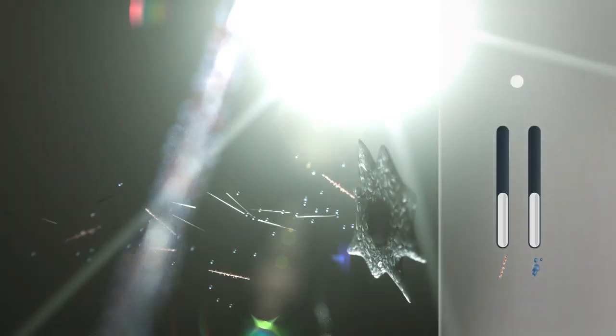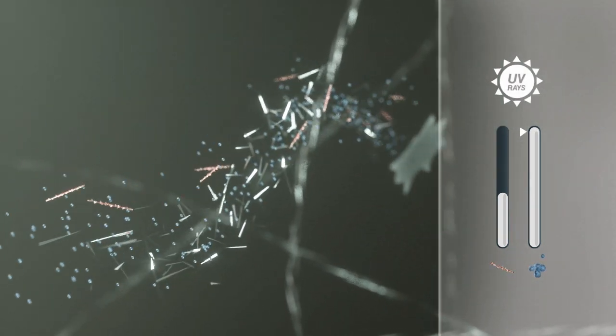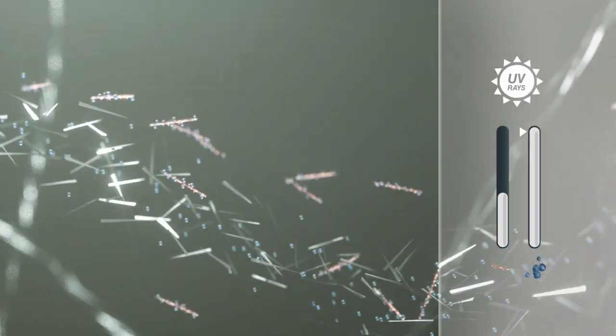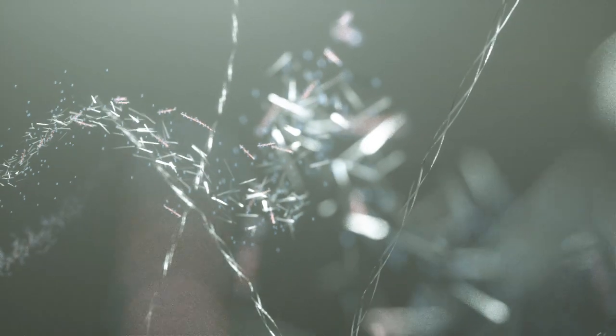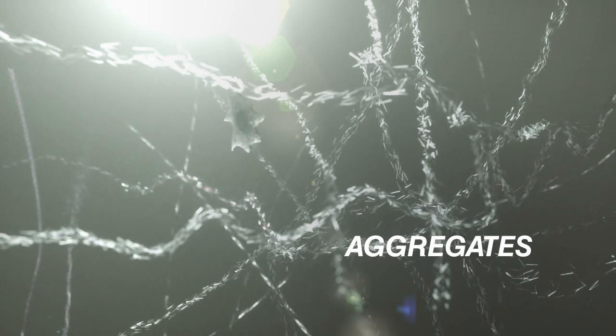However, under the action of UV rays, the fibroblast produces more tropoelastin while still producing the same amount of LOXEL. LOXEL is no longer able to fully play its part and non-functional elastin fibers accumulate into aggregates.